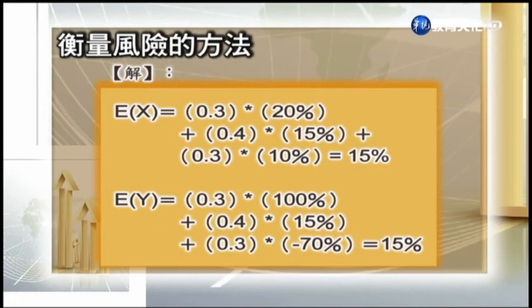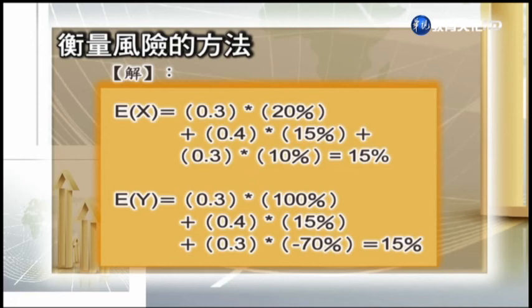對環球水泥：30%乘以20%，加上40%乘以15%，加上30%乘以4%，算出來是15%。同樣對宏碁：景氣好有100%報酬，正常有15%，景氣不好有-70%報酬，這樣算出來期望報酬也是15%。那我們接下來看怎麼衡量它的標準差。